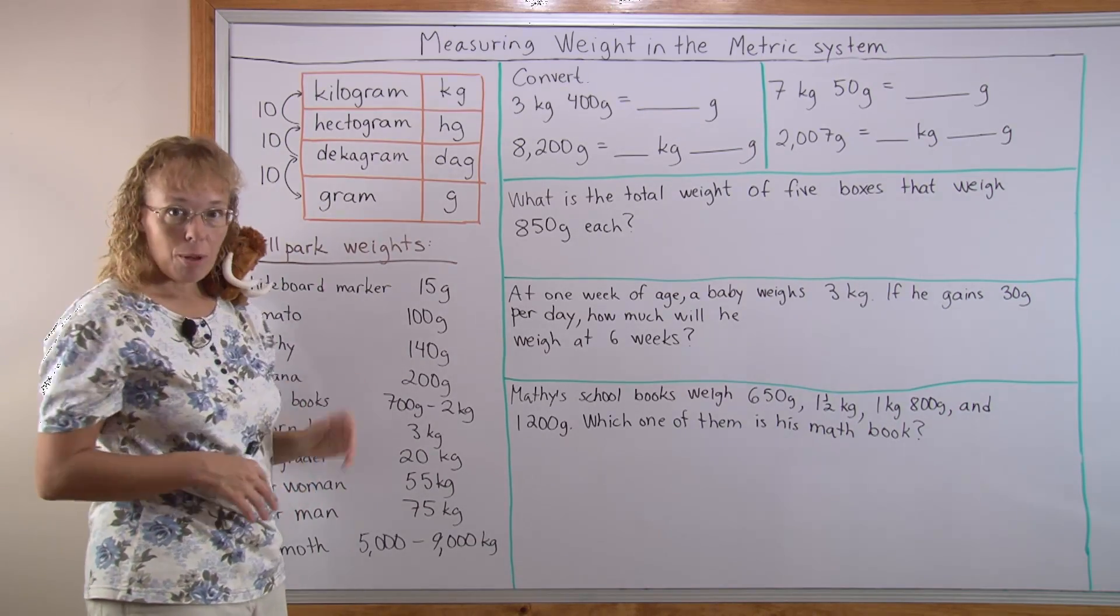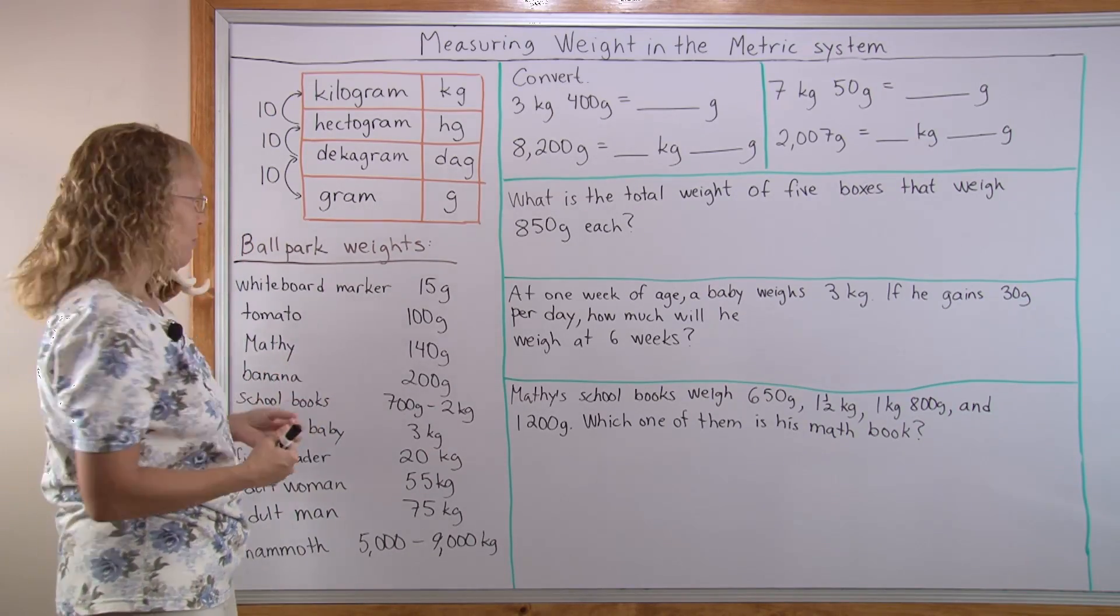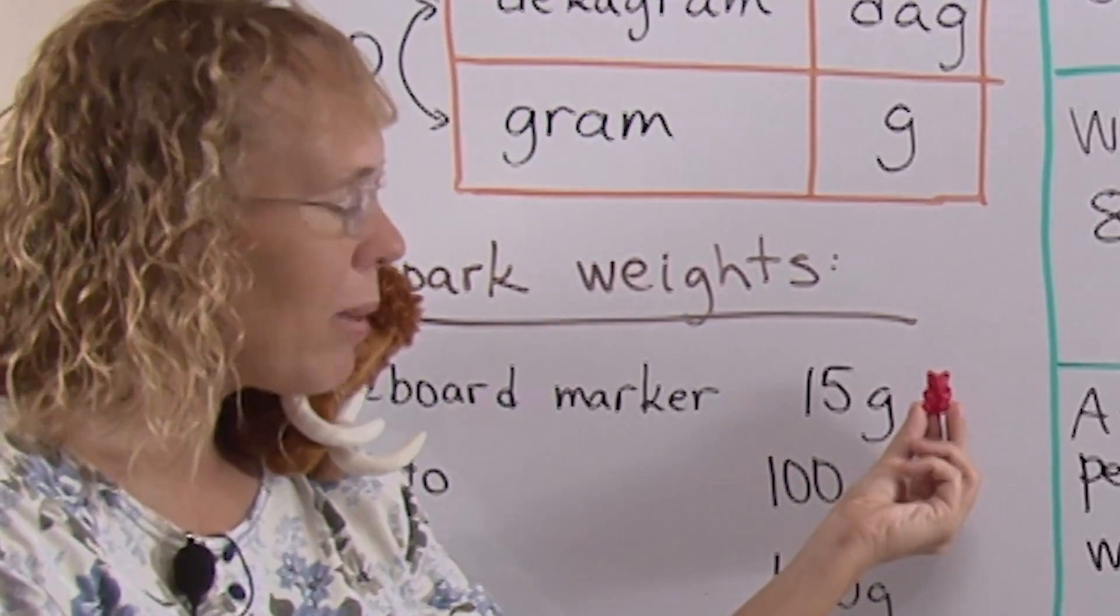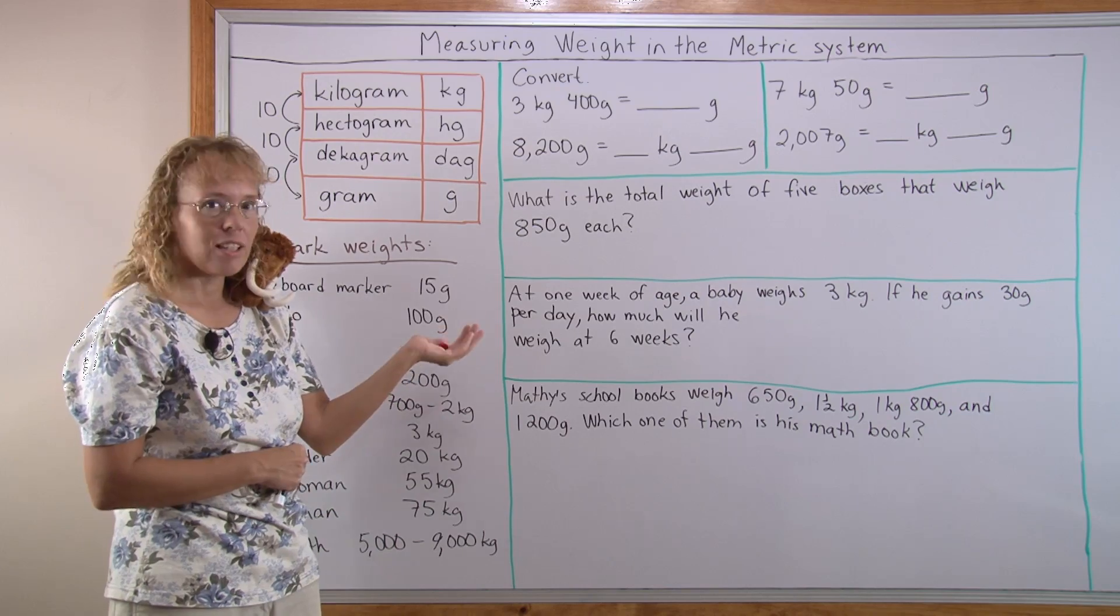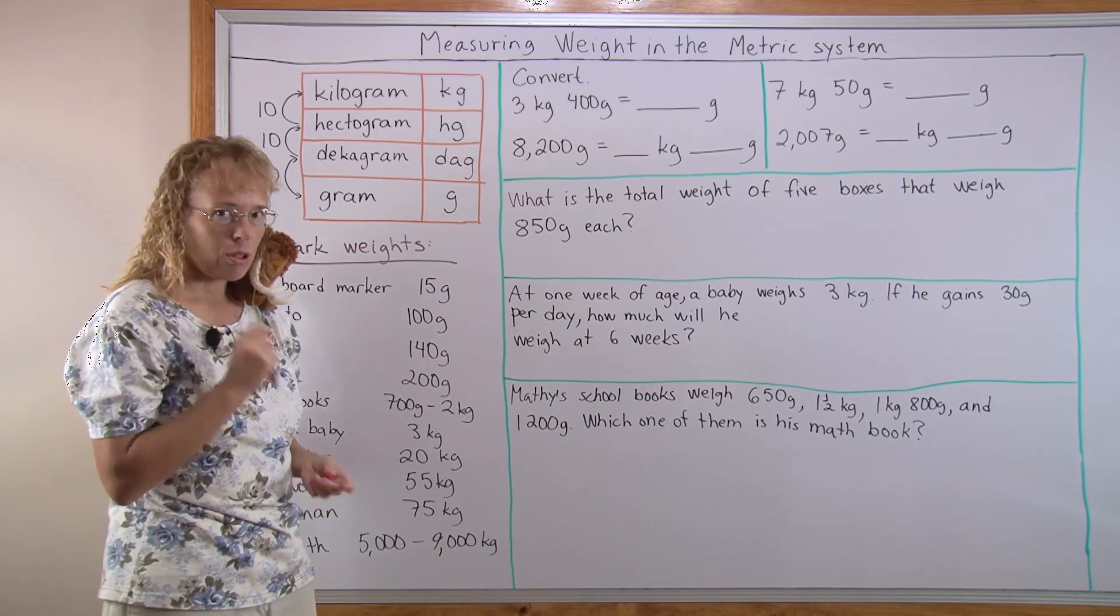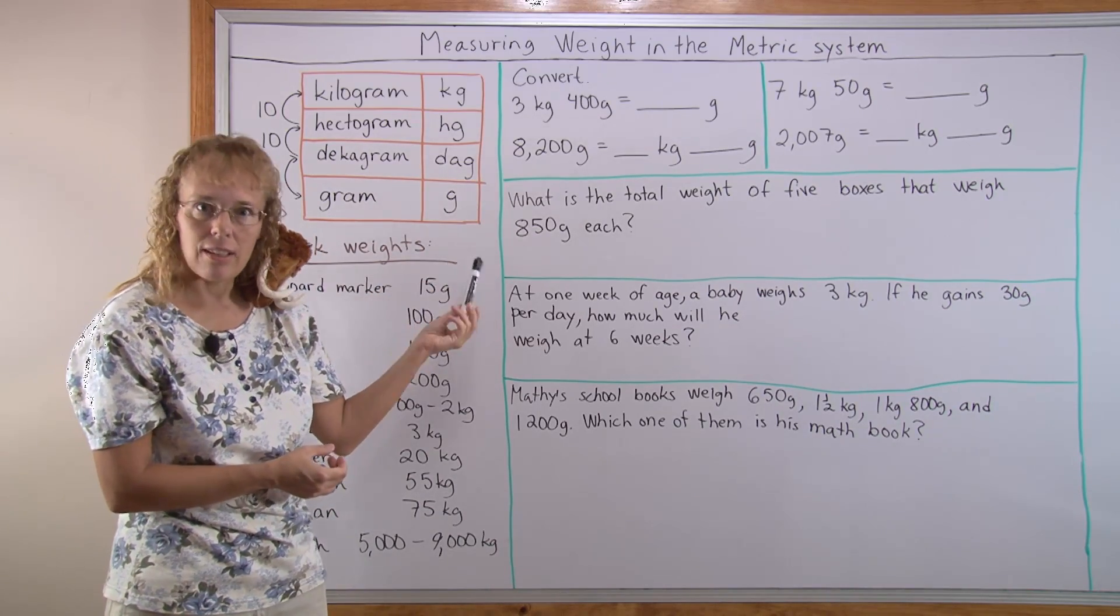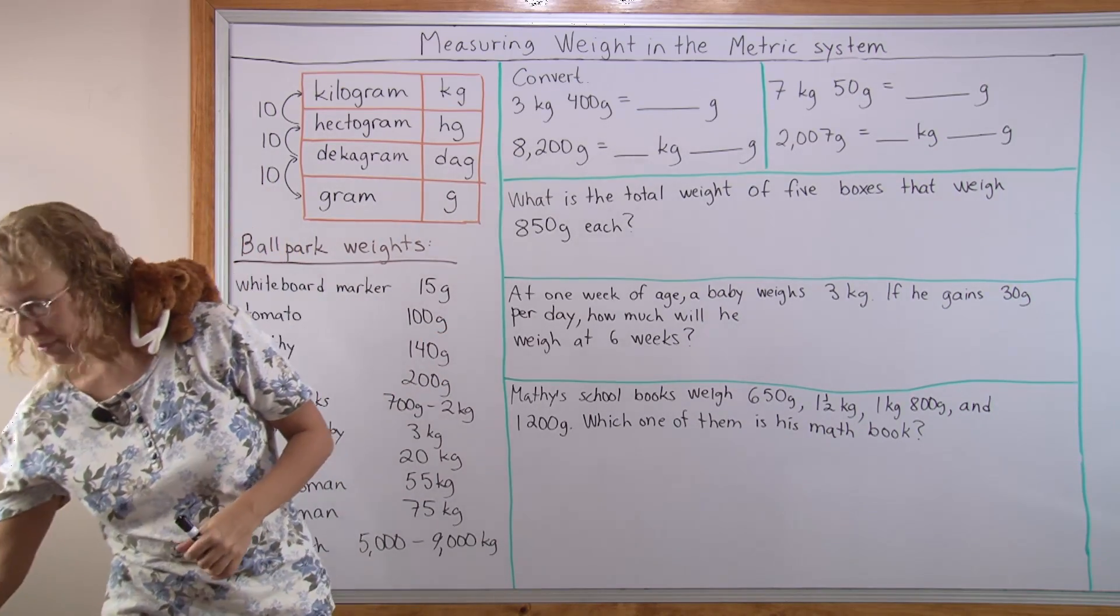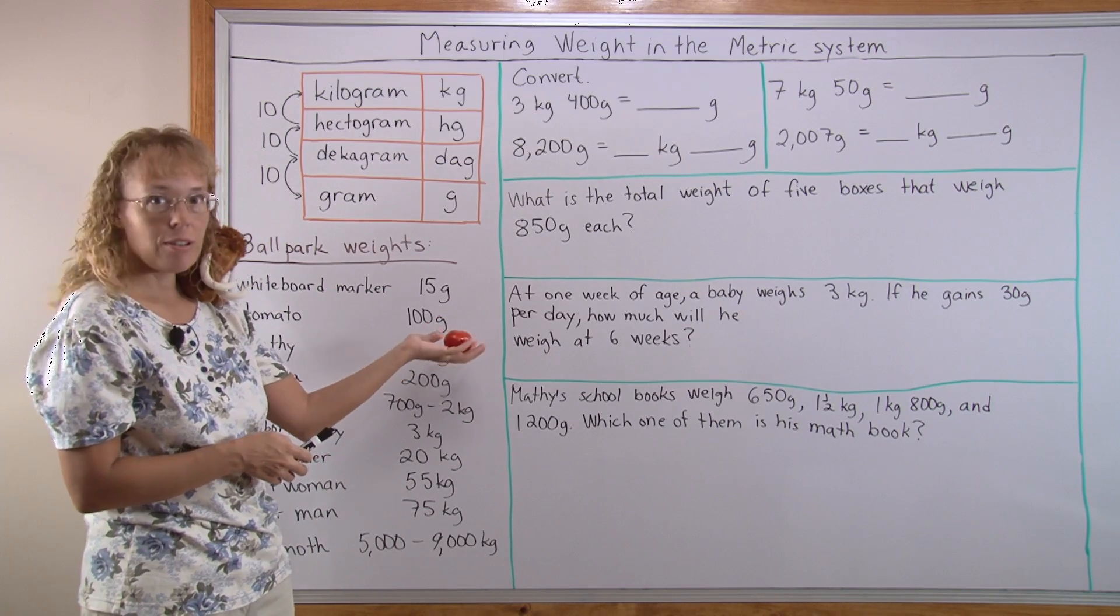I wrote here some ballpark weights that will help us visualize grams and kilograms. The first one I didn't write here but this is a little toy plastic bear and it weighs about three grams. This little thing feels almost nothing, is three grams. Gram is a very small unit. My whiteboard marker weighs about 15 grams. It's also very light and here is a regular tomato about 100 grams.